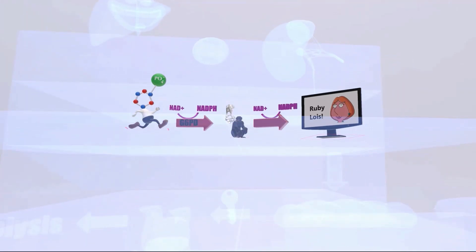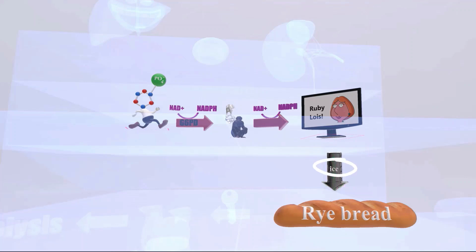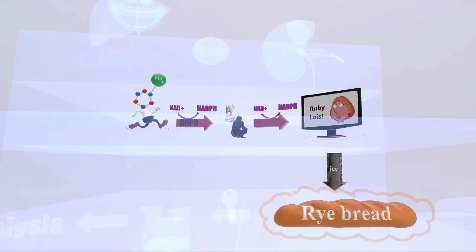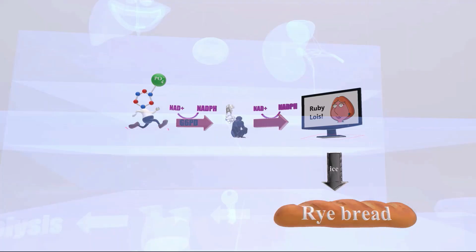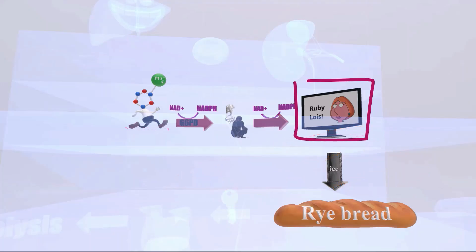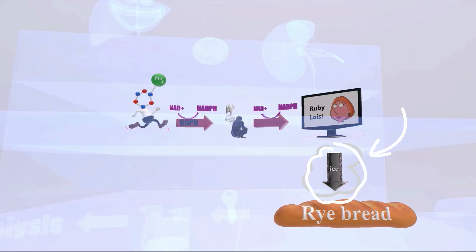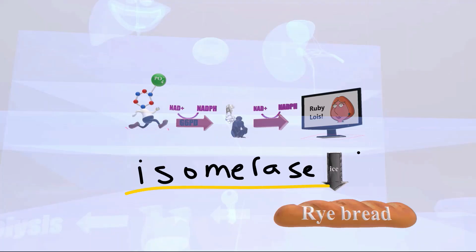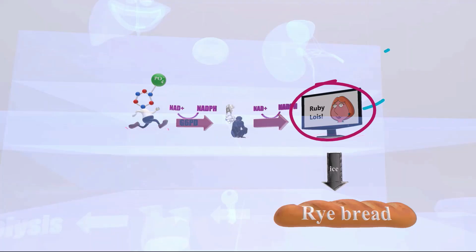Now we move to the reversible non-oxidative phase. Ribulose-5-phosphate is converted to ribose-5-phosphate, represented by rye bread with five compartments — 'rye' for ribose, 'five' for the 5. The arrow is made of ice, reminding us that the enzyme involved is an isomerase. Note that ribulose-5-phosphate can also be converted to xylulose-5-phosphate, though that's less critical.